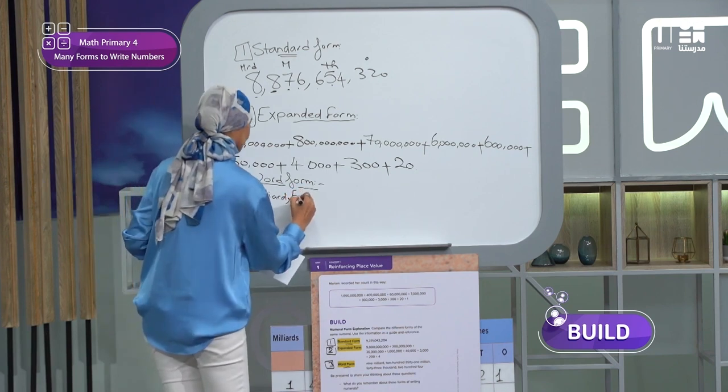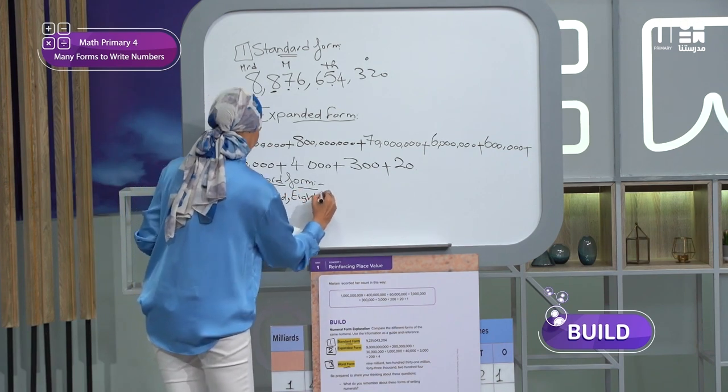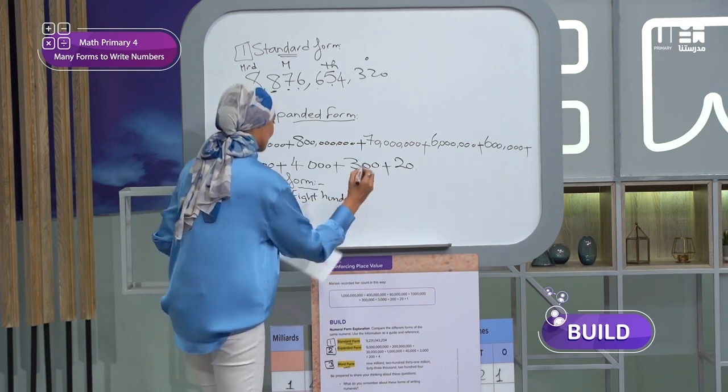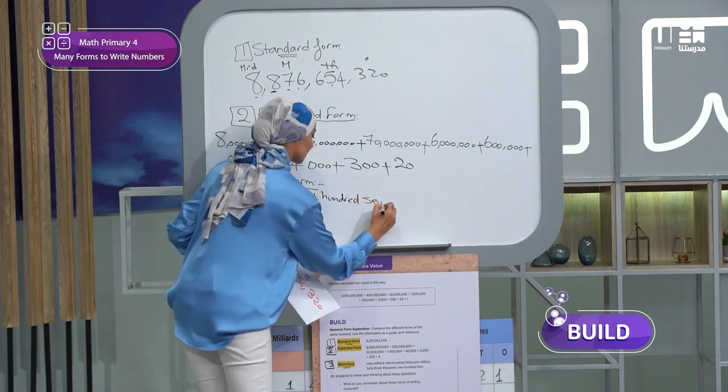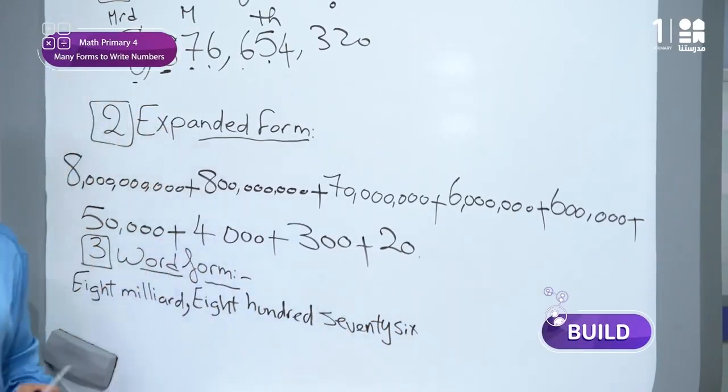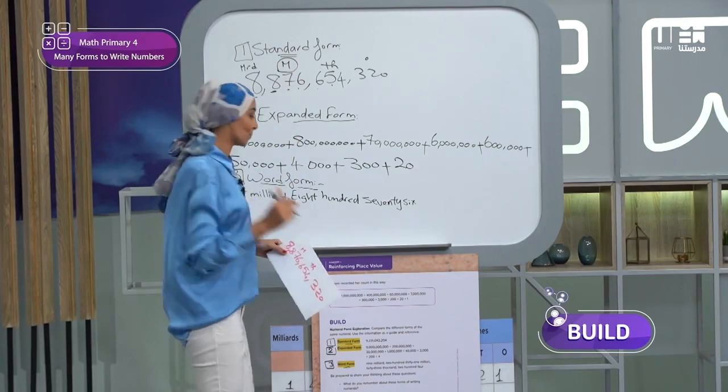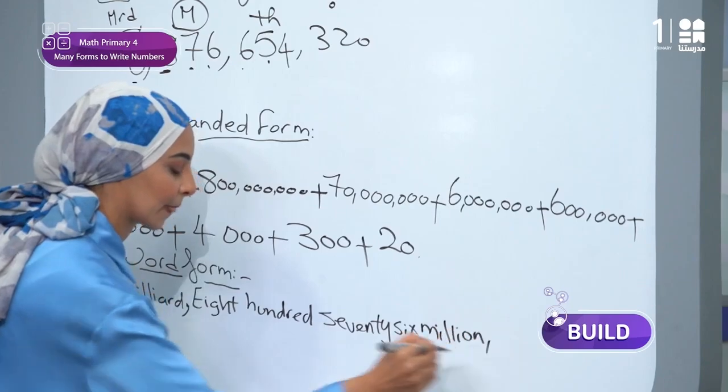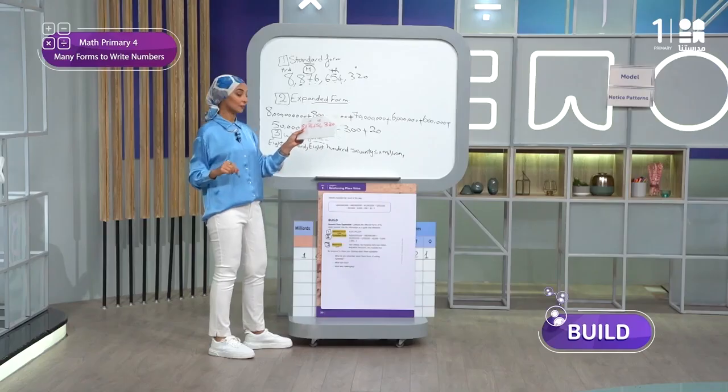Put the comma to separate between the period. Eight hundred, seventy-six. Don't forget to put the name of the period. Eight hundred seventy-six what? Yes, million.